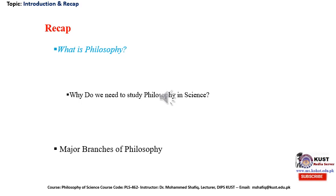The second branch of philosophy is called epistemology. Epistemology is concerned with key concepts such as the nature of knowledge, the sources of knowledge, how we get knowledge, and what is meant by knowledge — including what is valid and invalid knowledge. The importance of this branch is very significant, especially in these times in which we are bombarded with disinformation. We need to understand the basic concepts of knowledge and what constitutes genuine knowledge.